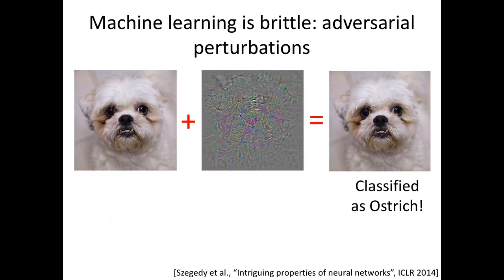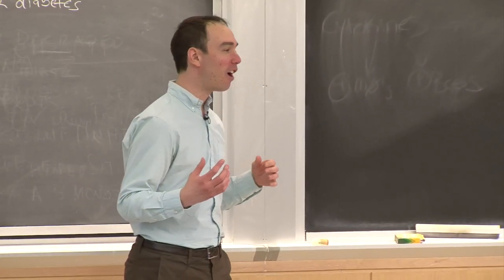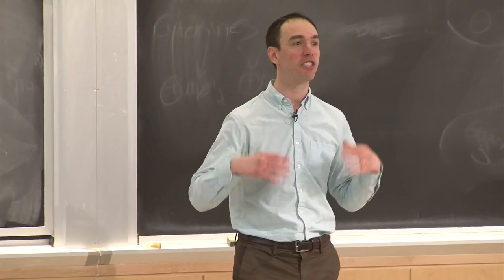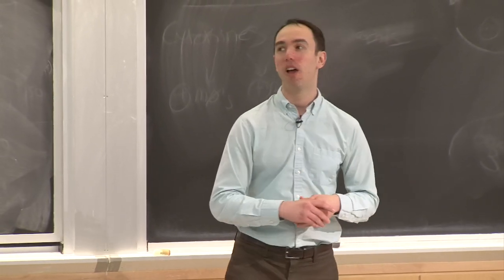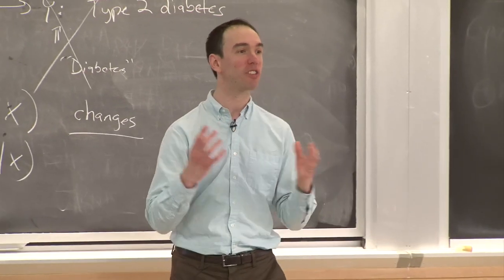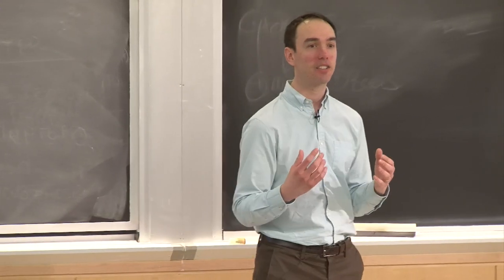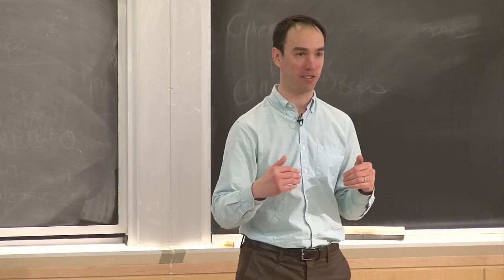This observation was published in a 2014 paper called 'Intriguing Properties of Neural Networks,' and it kick-started a huge surge of interest in the machine learning community on adversarial perturbations. Questions arose: if you perturb inputs just a little bit, how does that change your classifier's output? Could that be used to attack machine learning algorithms? And how can one defend against it?